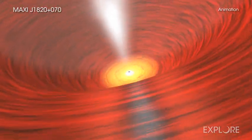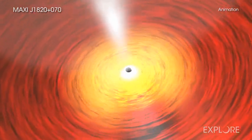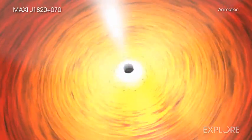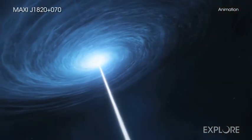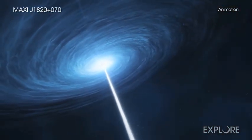Some of the hot gas in the disk will cross what is called the event horizon, or the point of no return, and fall into the black hole. But some of it is also blasted away from the black hole in a pair of short beams of material, or jets.